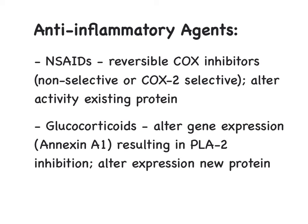To summarize, we've discussed two types of anti-inflammatory agents. NSAIDs are reversible inhibitors of the COX enzymes, either non-selective or COX-2 selective, and work by altering the activity of an existing protein. Glucocorticoids work by altering the gene expression of Annexin A1, which inhibits phospholipase A2, preventing cleavage of arachidonic acid from phospholipids in the cell membrane.